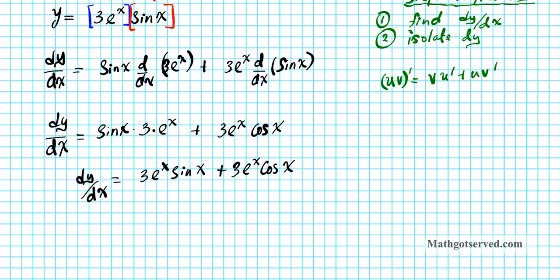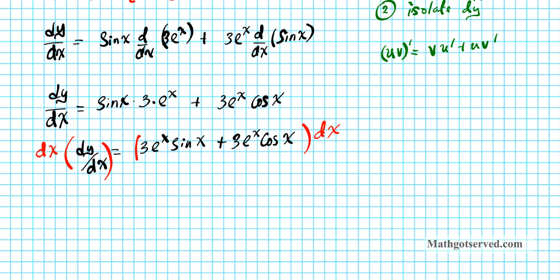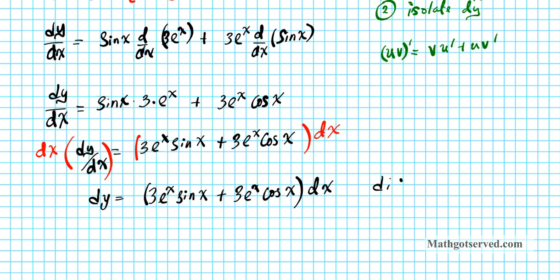Now to find the differential dy, we isolate dy by multiplying both sides of our equation by dx. So the differential dy is equal to 3 e to the x sine x plus 3 e to the x cosine x, this entire expression multiplied by dx.